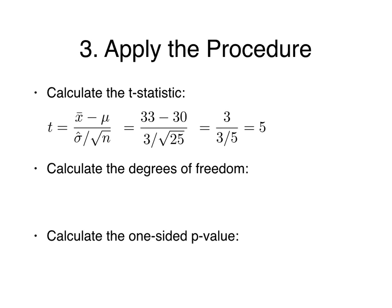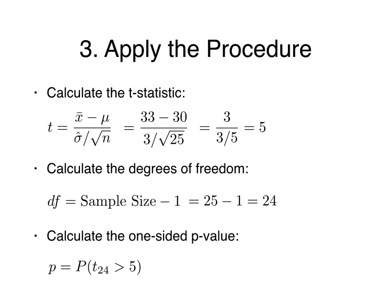The degrees of freedom equals the sample size minus 1. Since we had a sample of 25 fish, we have 25 minus 1, which is 24 degrees of freedom. Finally, the one-sided p-value is the probability that we observe results as extreme or more extreme than our sample — equal to the probability that the t-distribution with 24 degrees of freedom is greater than 5, which is approximately 2 times 10 to the negative fifth. This result can be found in a p-value table or calculated using statistical software such as R.